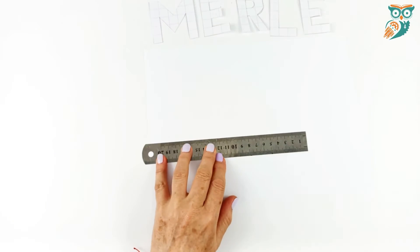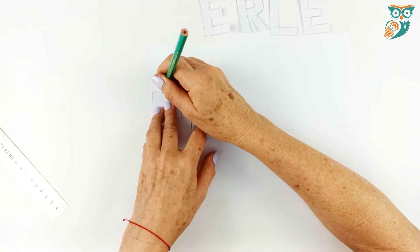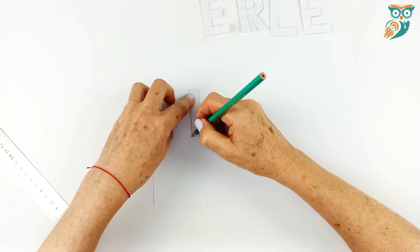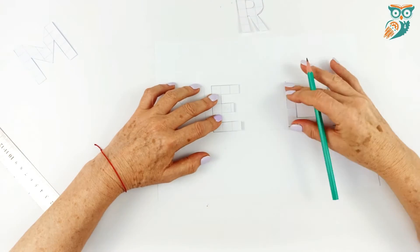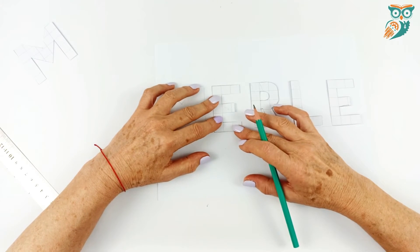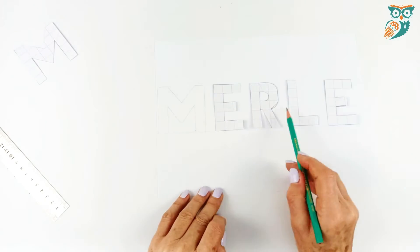Now we're going to take a piece of paper. We're going to make a line with our ruler and this is just going to help make sure that our letters stay straight. We're going to trace onto the paper. Make sure that you spread those letters out nice and evenly. You want to make sure that there's a little bit of space between the letters.